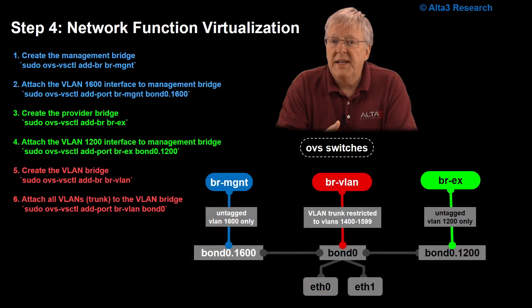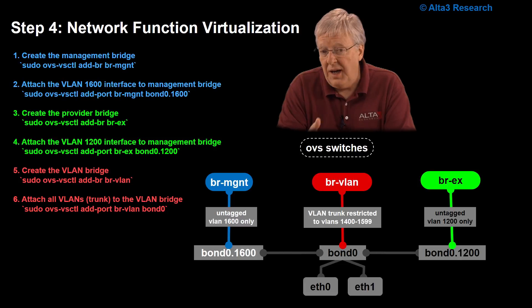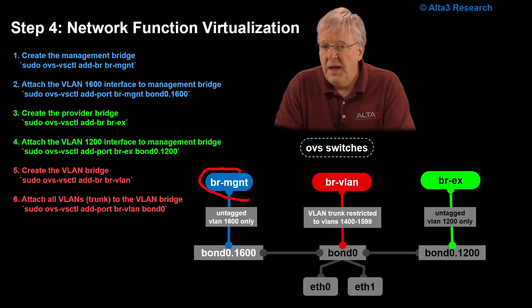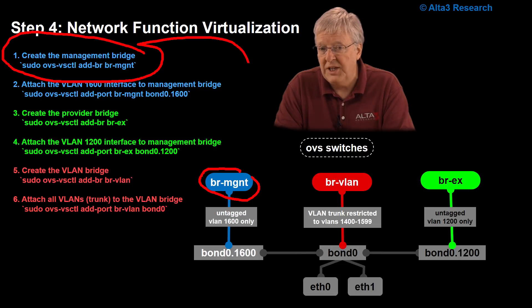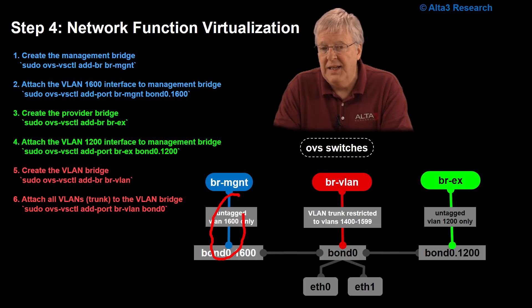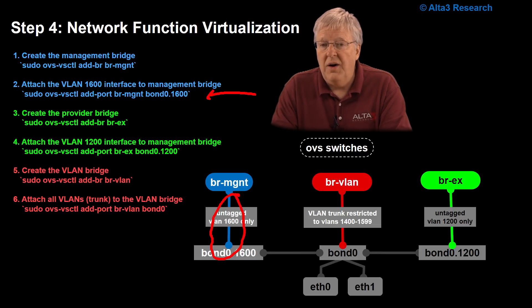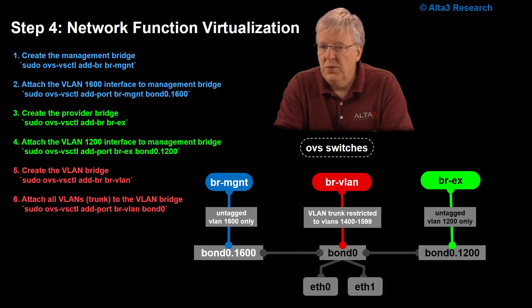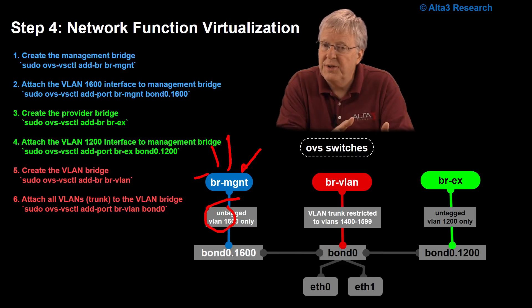Now, our next step is to add network function virtualization. I'm going to use OpenVSwitch switches. So, we're going to create a switch named Bridge Management, and we do it with this configuration right here. That will actually create that bridge right out of thin air. The next step, in order to effectively plug it in to bond zero 1600, is the next step that you'll see right here. And now, I have literally wired in a bridge named Bridge Management to bond zero dot 1600. Since untagged traffic is coming into Bridge Management, any connectivity off of Bridge Management is going to be untagged.